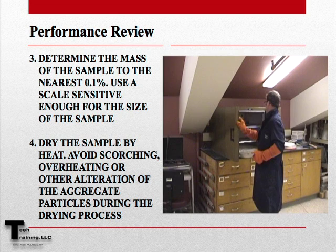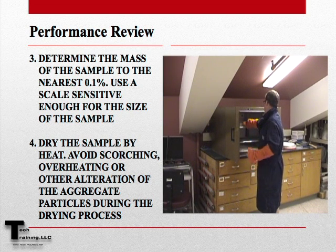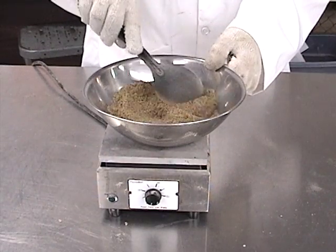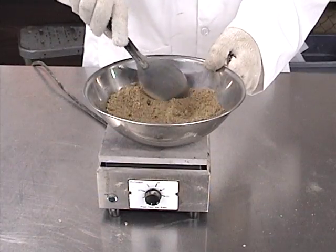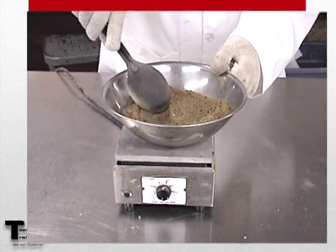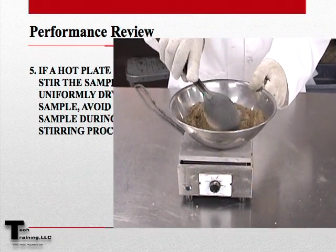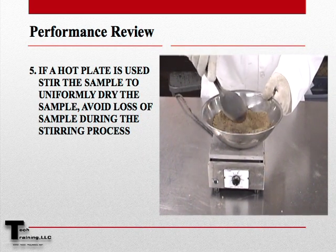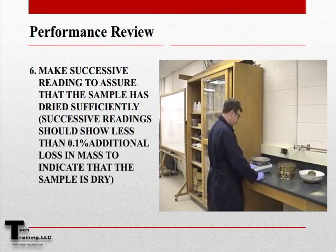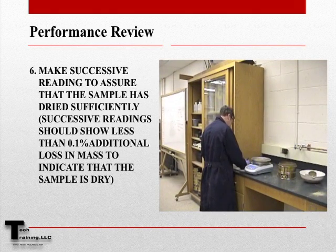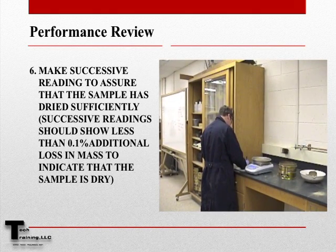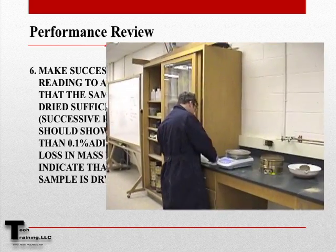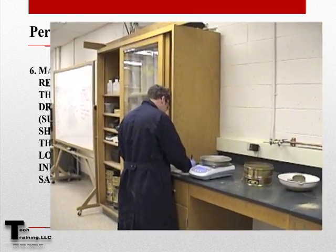After determining the mass of the moist sample, we want to dry the sample by heat. Avoid overheating, scorching, or other alterations that may occur to the aggregate particles during this process. If a hot plate is used, stir the sample to uniformly dry it, avoiding loss of material during stirring. After heating, make successive readings to ensure that the sample has dried sufficiently. Successive readings should show less than 0.1% additional loss in mass to indicate that the sample is dried sufficiently.